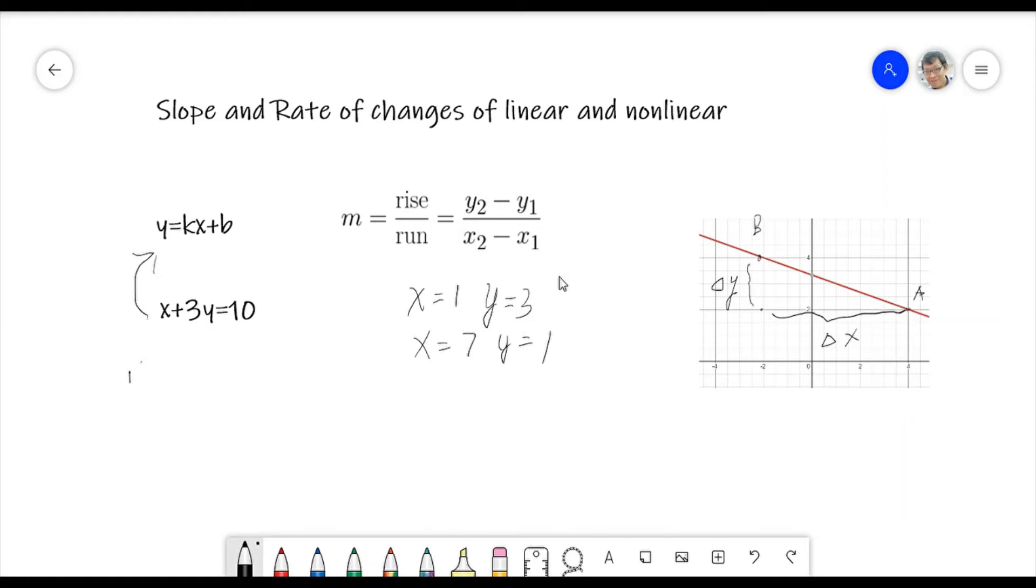Then based on the formula, this will be X1, X2, Y2, Y1. So M equals to Y2, one minus three, negative two, and X2 minus X1, seven minus one is six. So negative one over three. This is one way.